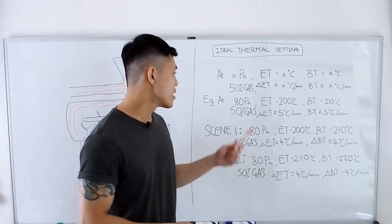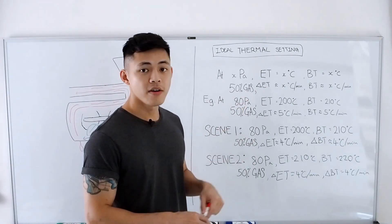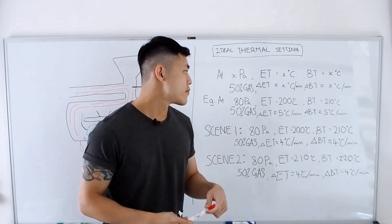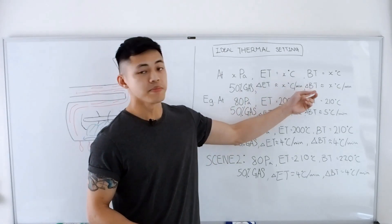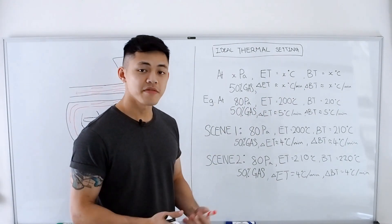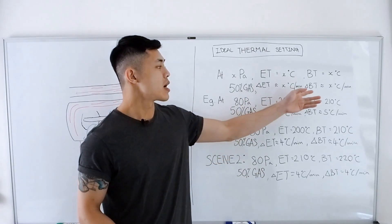Next we also have the current gas setting for the flame of the roaster, followed by the delta ET and BT, which is the rate of rise of the ET and BT.